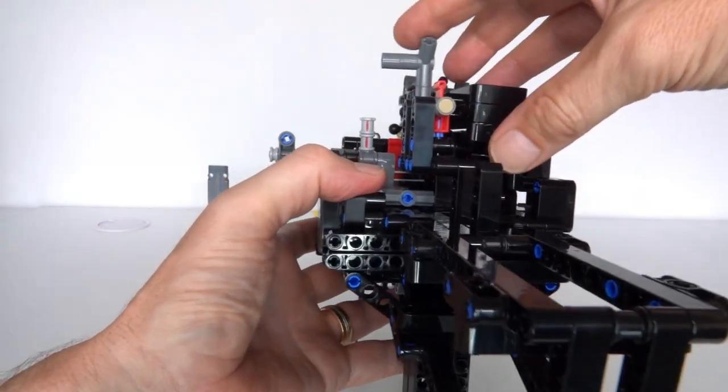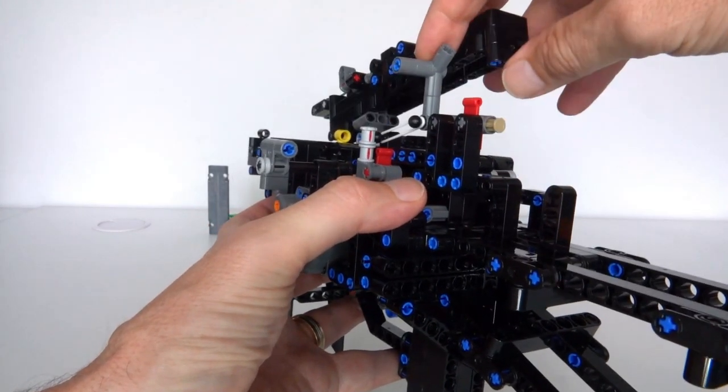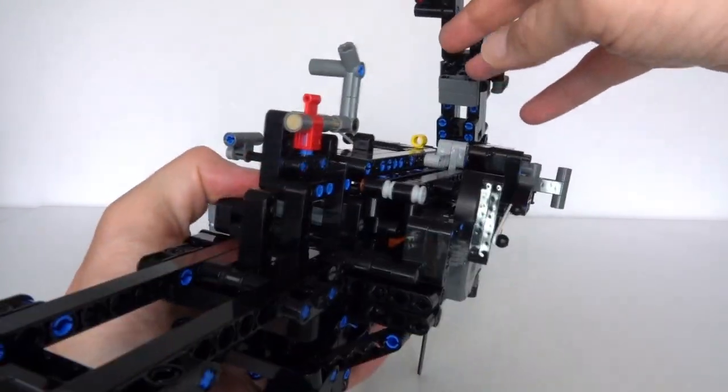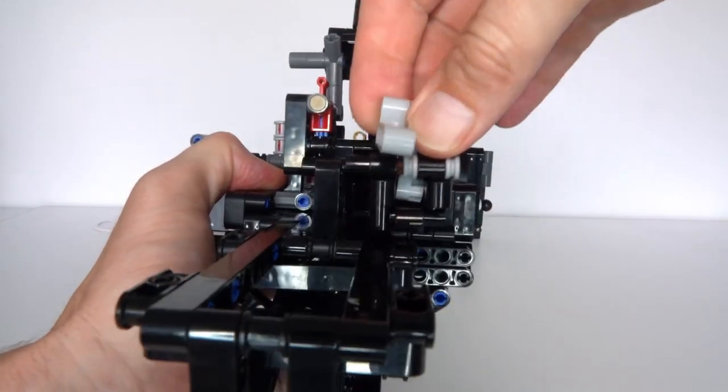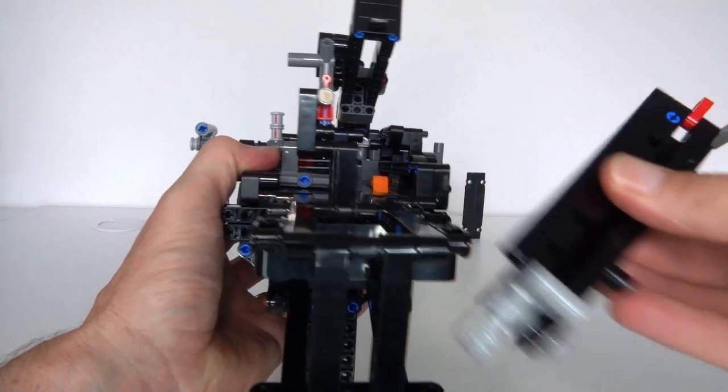You also need to lift up the bullet pushing mechanism. So that is this one here. And that will allow you to take out the old cartridge. So what we need to do is just pull that out like that. And that is now empty.